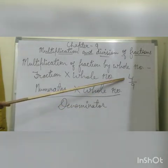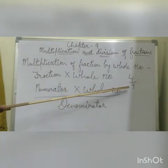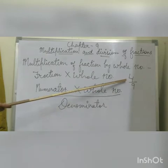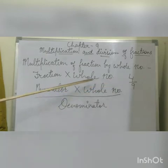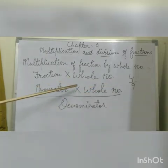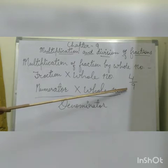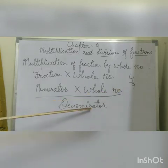For example, 4 is the numerator and 9 is the denominator. So you have to multiply 4, in place of the numerator, with the whole number, and put 9 in place of the denominator.